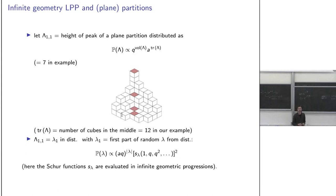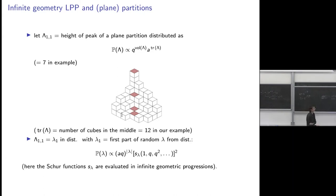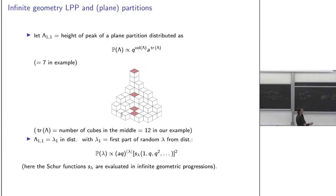Another natural statistic on plane partitions is the trace: the number of boxes along the diagonal (here equal to 12), i.e., the matrix trace of the height array. This gives a two-parameter model with weight q^{volume} · a^{trace}, where a and q are both less than one. We look at the highest part — the peak — of the plane partition.